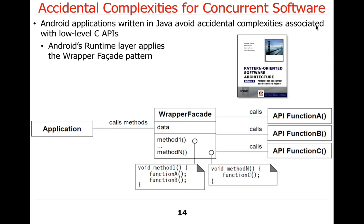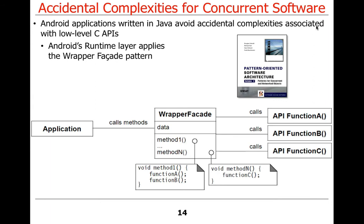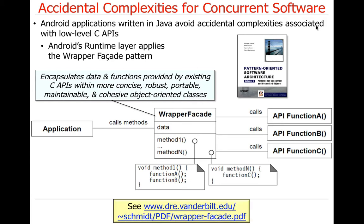What's happening under the hood is Android's runtime layer is using something called the wrapper facade pattern, which is a pattern described in the POSA 2 book that I co-authored. It basically encapsulates data and functions provided by existing low-level C APIs with more concise, robust, portable, maintainable, and cohesive object-oriented classes. You don't have to worry about these lower-level accidental complexities - they are hidden from you.